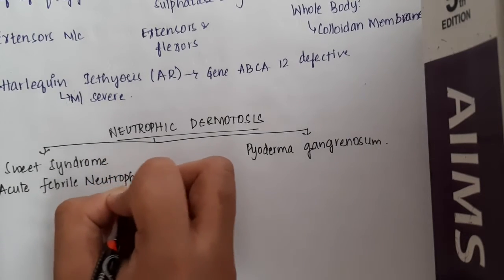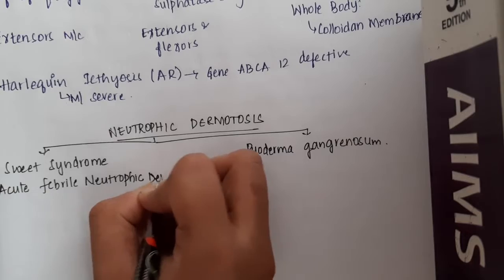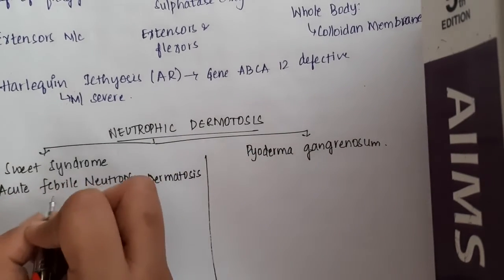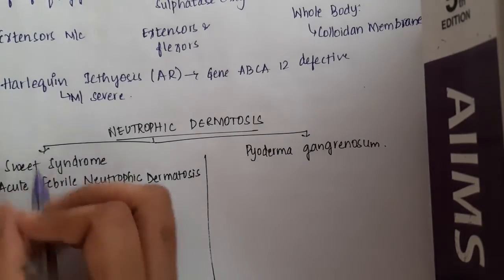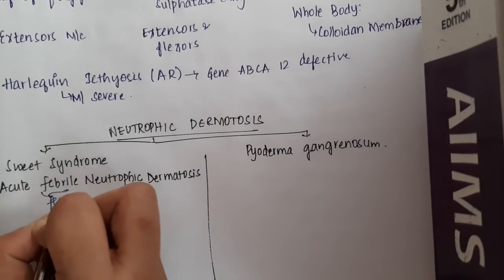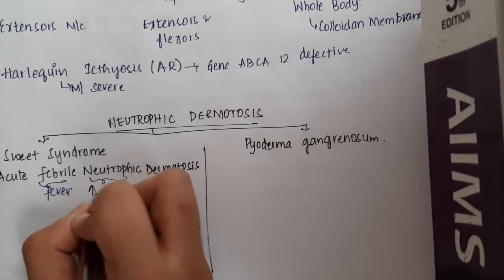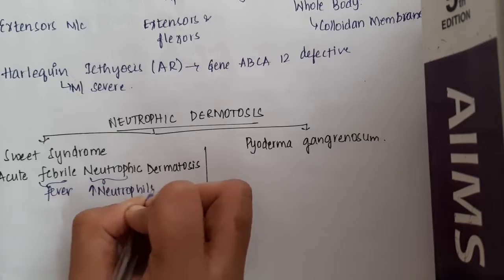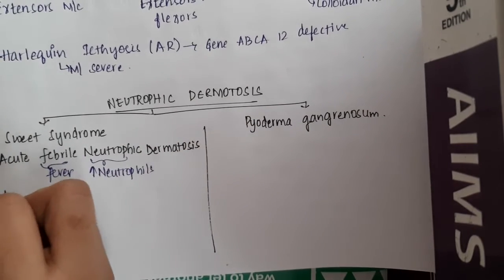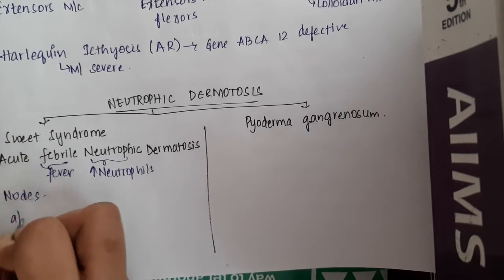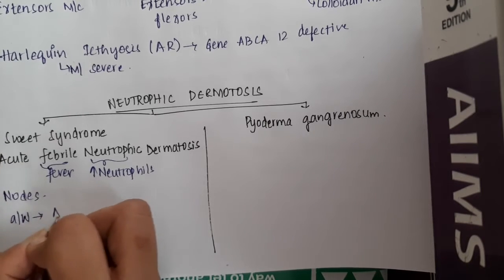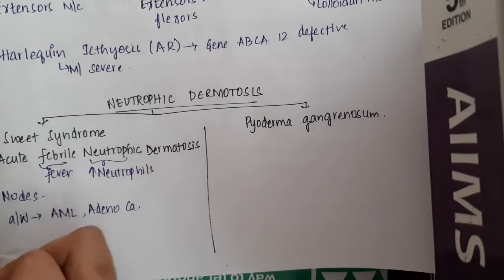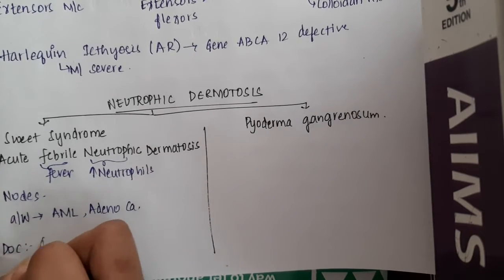As the name says, it is acute, it causes fever — so there is fever. Neutrophilic means increased neutrophils are present. One important thing is that nodules are associated with it. Sweet syndrome is associated with acute myeloid leukemia and also adenocarcinoma.